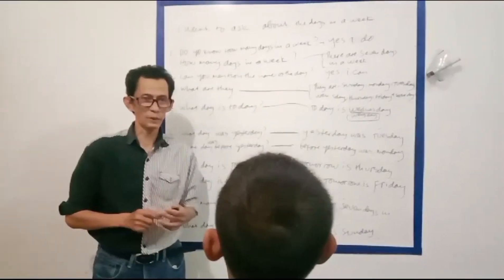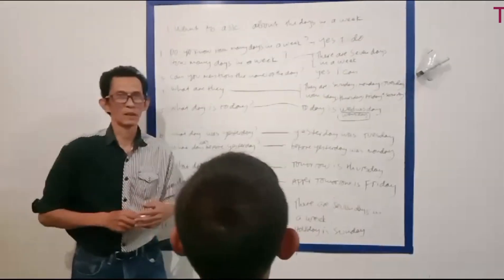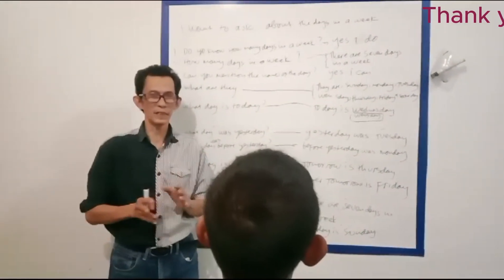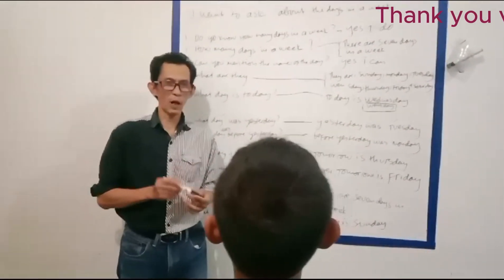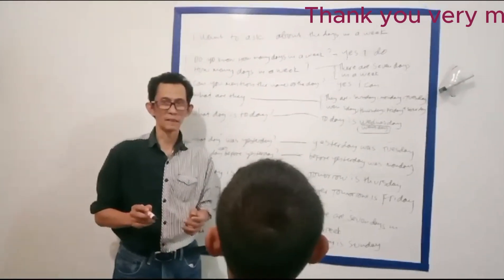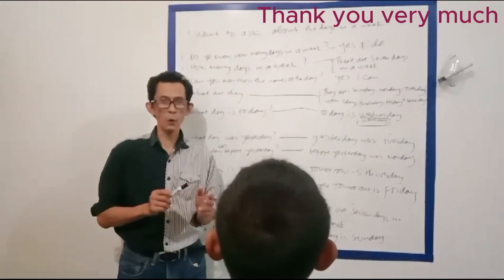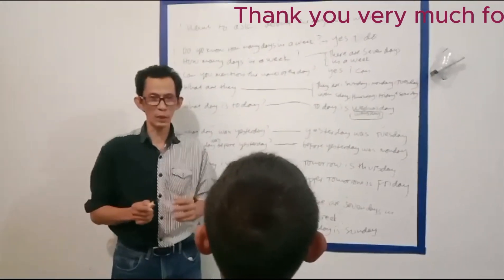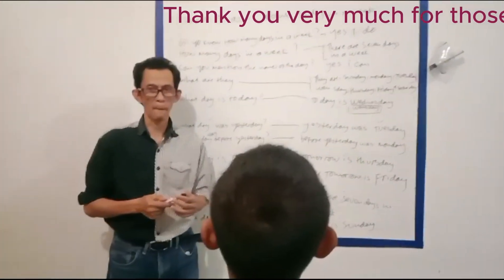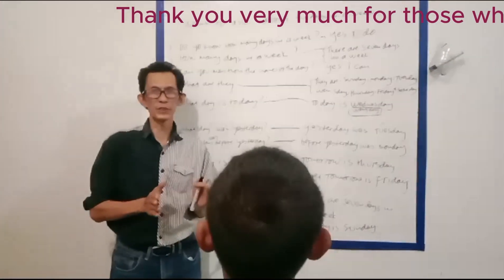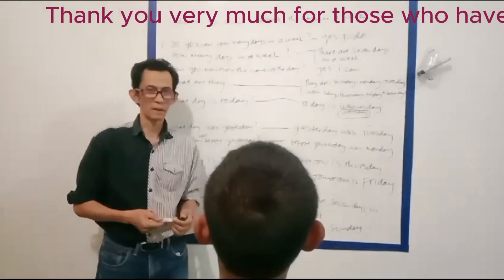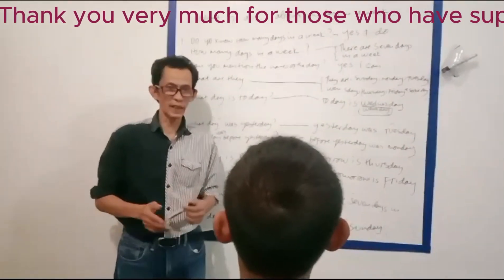Good afternoon. Good afternoon. How are you this afternoon? Good afternoon. Okay, now I want to ask about the days in a week. Do you know how many days in a week? Yes. How many days in a week? There are 30 days in a week. Okay. Can you mention the name of the day? Yes, I can. Okay, what are they?